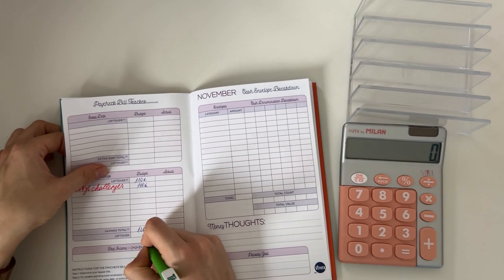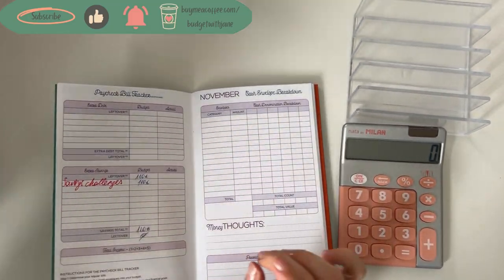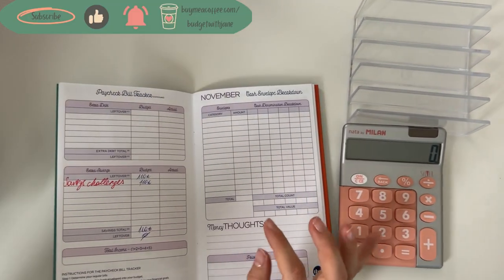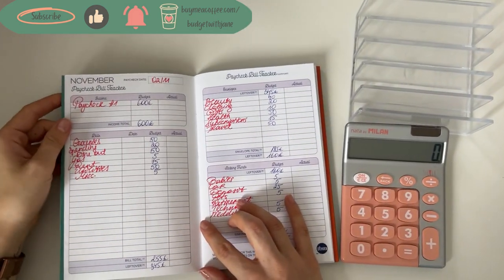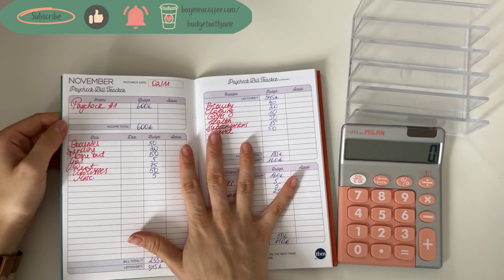And all of that 110 is gonna go into our savings challenges, which is so fun to see. It's always more fun to do the savings challenges if you have more money to put there. So that is all for the first paycheck of November.